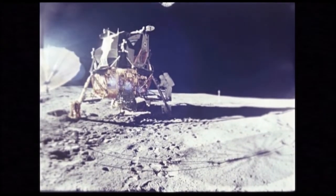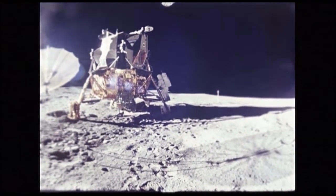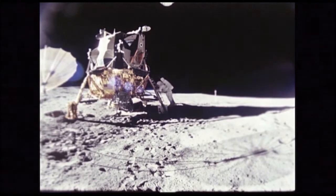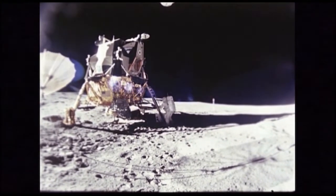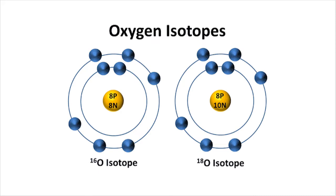Fun fact! In chemistry, any element's atomic nucleus is made up of particles known as protons and neutrons. Isotopes of an element have the same number of protons in the nucleus as the regular version, but different numbers of neutrons. In the moon scenario, oxygen's isotope O-18, which has 8 protons and 10 neutrons, is slightly heavier than the much more common O-16, with its 8 protons and 8 neutrons.